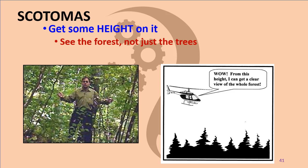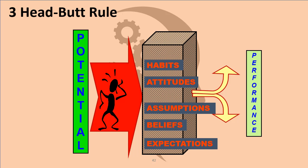One of the corporate buzzwords is 'get some height on it' — from the example of being in a helicopter traveling at 200 miles an hour. If you're only 500 feet above the ground, everything is a blur. But if you move up to 1,500 feet, even going 200 miles an hour, you can see things clearly. So when you're having a problem, ask yourself: What is it I'm not seeing? I need to get some height on this, get out of the trees, and look at the whole forest — the big picture. So here's one thing to get out of this: the three headbutt rule.